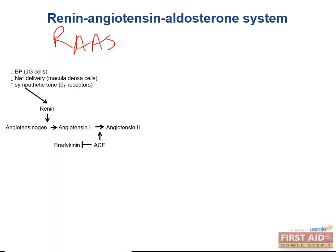Things like a decrease in blood pressure, reduced delivery of sodium to the macula densa cells in the distal tubule, or increased sympathetic tone will lead to an increase in the release of renin. Renin is released from the juxtaglomerular cells — modified smooth muscle cells in the afferent arterioles. Renin is an enzyme which converts angiotensinogen produced by the liver into angiotensin 1.